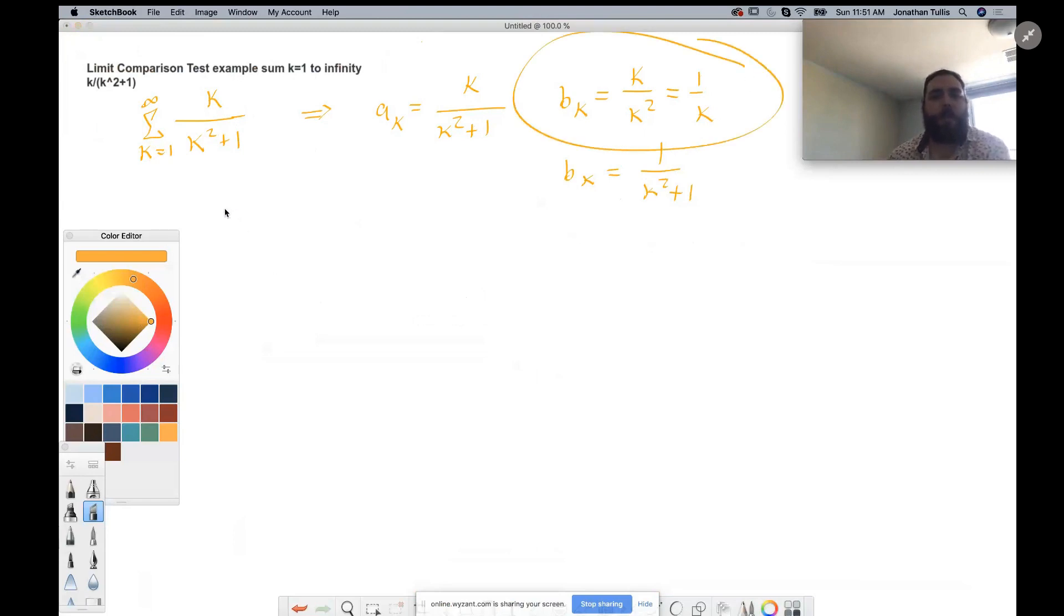So then the limit comparison test is first, we need to take the limit as k goes to infinity of a to the k divided by b to the k, b sub k, and then that's going to be equal to...